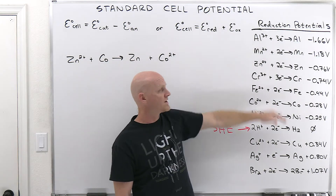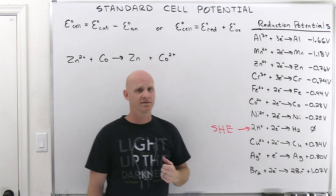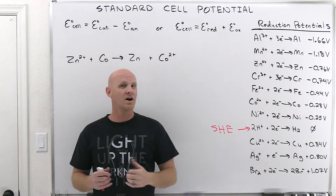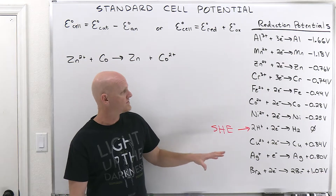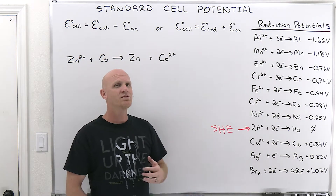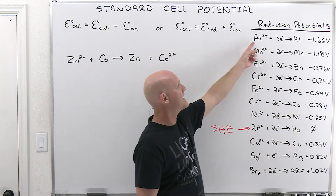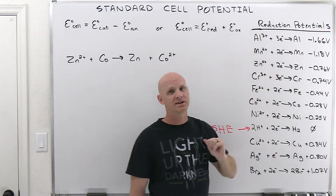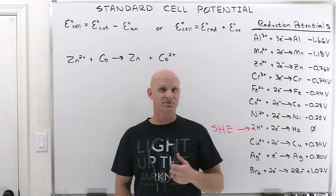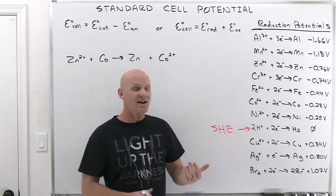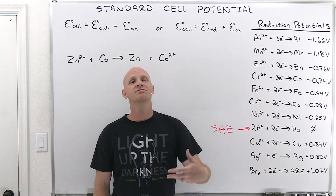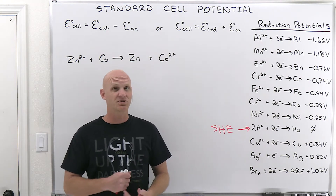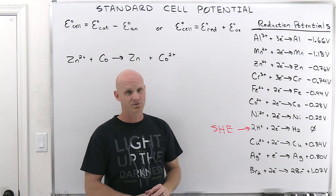These reduction potentials are written as reductions — electrons are on the reactant side of every one of them. It used to be common to see a table of standard oxidation potentials, but that's no longer common because it's not needed. The standard oxidation potentials are just the exact reverse reactions. For example, Al³⁺ + 3e⁻ → Al at −1.66 volts reversed gives Al → Al³⁺ + 3e⁻ at +1.66 volts. Reverse the direction, change the sign. Most textbooks will only give you the table of reduction potentials.